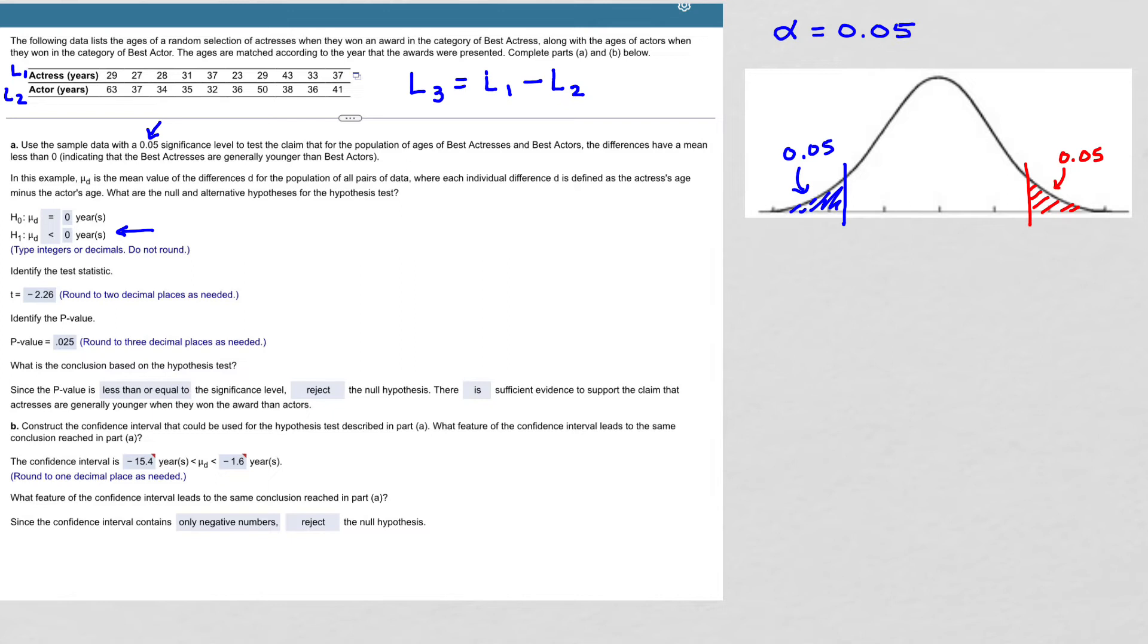So what that tells me is that in the center, I have 90% or 0.90. There's 5% on the left tail, 5% in the right tail. That makes 10% total, and the remainder is 90%.